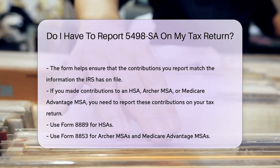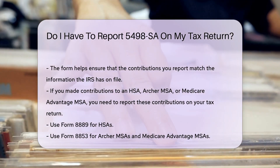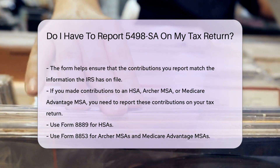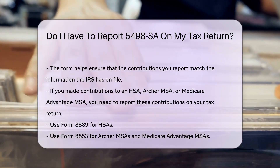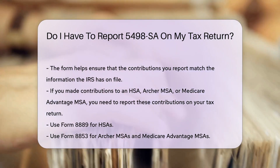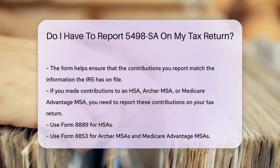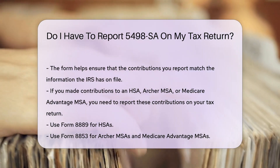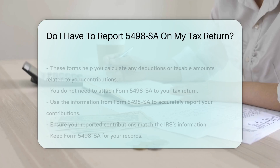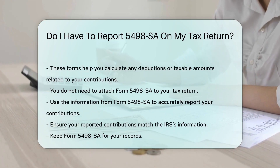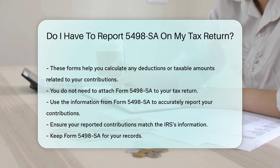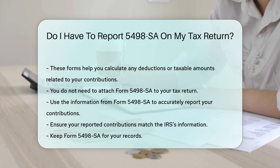If you made contributions to an HSA, Archer MSA, or Medicare Advantage MSA, you will need to report these contributions on your tax return. Use Form 8889 for HSAs, or Form 8853 for Archer MSAs and Medicare Advantage MSAs. These forms will help you calculate any deductions or taxable amounts related to your contributions.